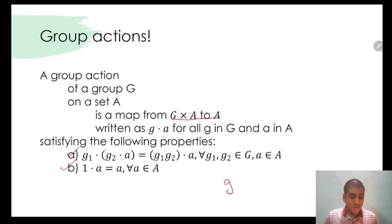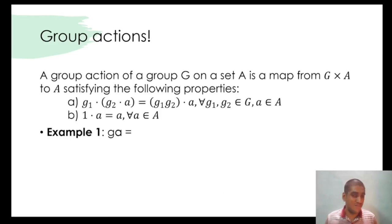We told that instead of G dot A, we will simply write it as GA. I hope you are all set for some action now. Let's look at some interesting examples. The first one we quickly looked at last day is GA is equal to A. This is a group action, turns out it is.